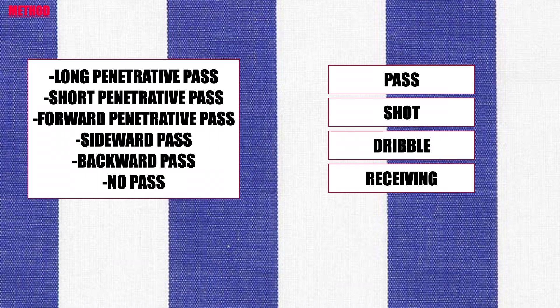If the team of the target player maintains possession after the player's last action with the ball, this is registered as a successful action — typically a pass that reaches a teammate, but it could also be a shot that is scored or a dribble or receiving action that produces continued possession. If the ball goes to an opponent and possession is not maintained, it is registered as an unsuccessful action.